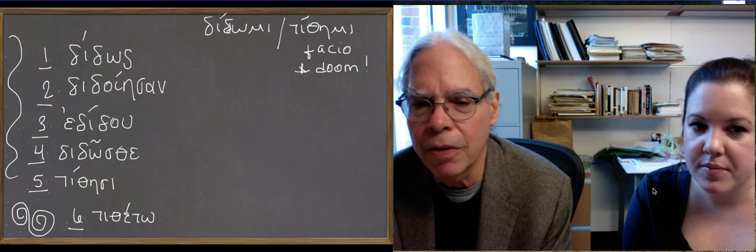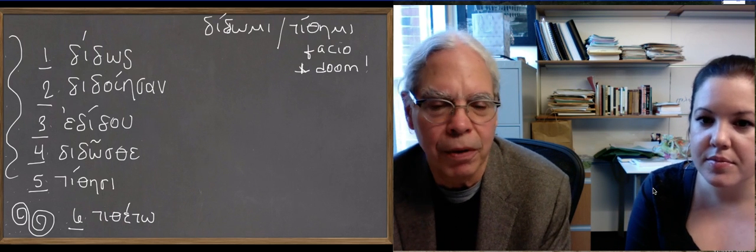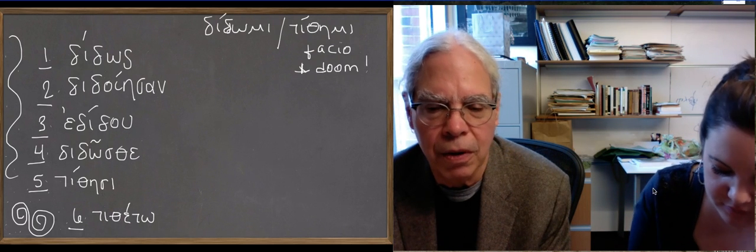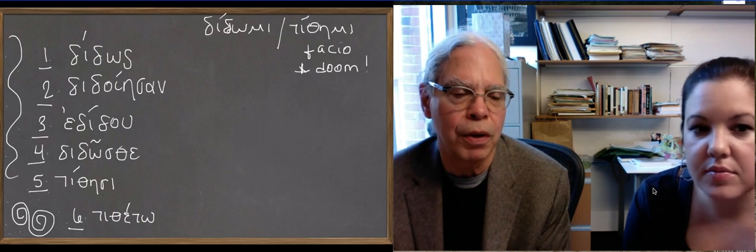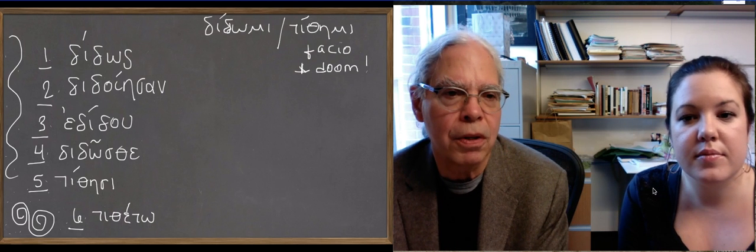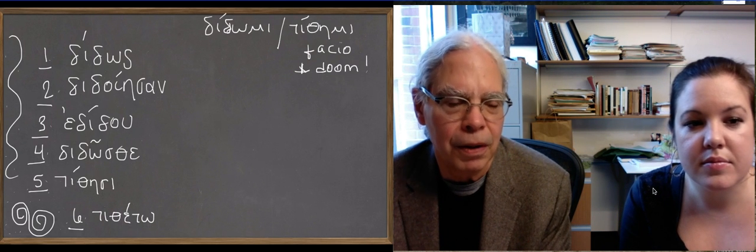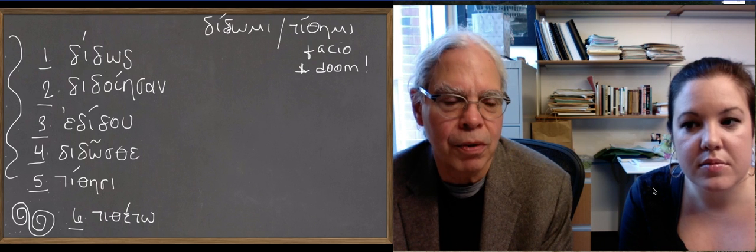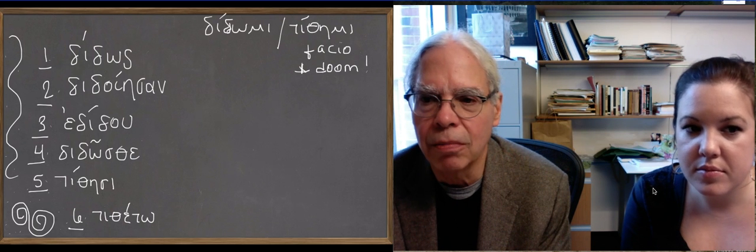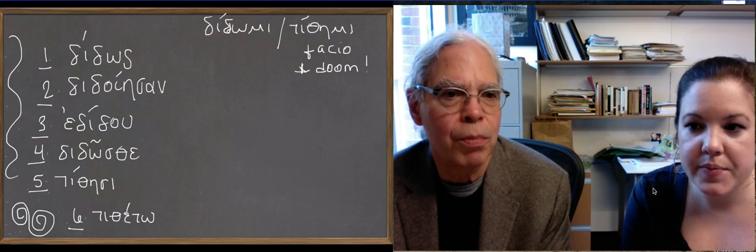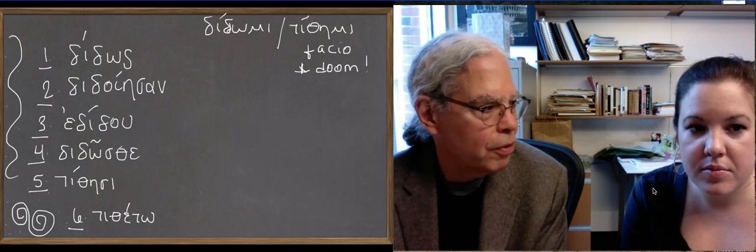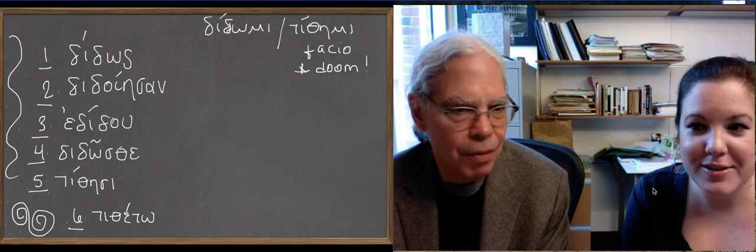We're not going to look at the principal parts yet. We know everything we need to know from the video we just did about the three aspect stems and the distinctive features of these verbs. So if we look at the first one on our list here, we've got δίδως. What do you do when you see an athematic verb like this? You're going to know them when you see them, because there are just three of them. The first thing you want to do is decide which aspect stem it is.